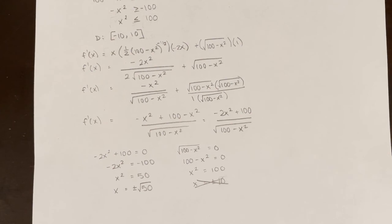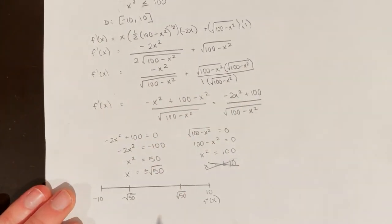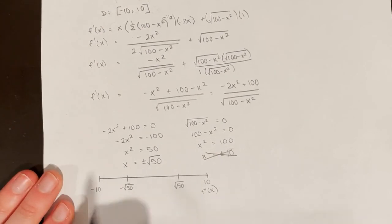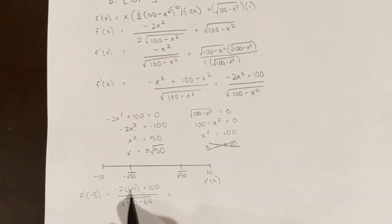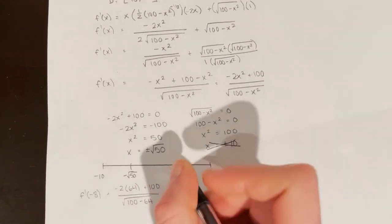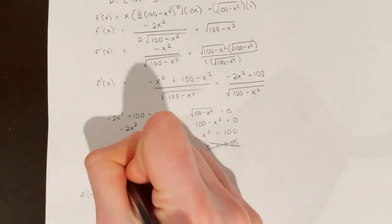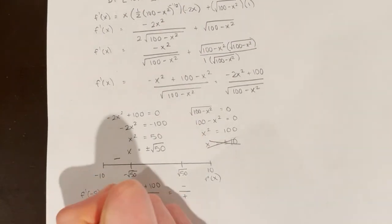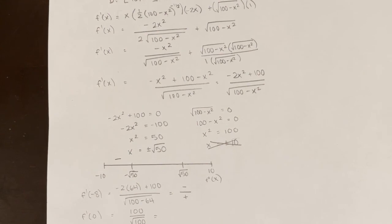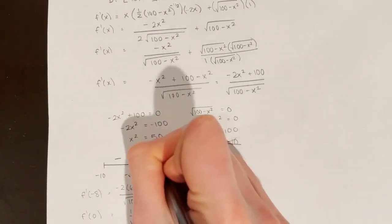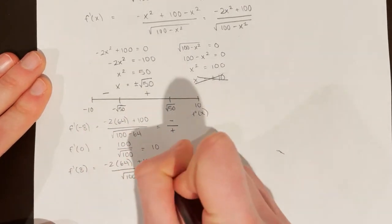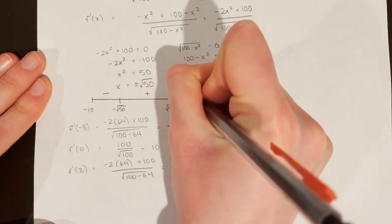Now I make my sign chart and test values. Testing f prime of negative 8 between negative rad 50 and negative 10: I get negative 2 times 64 plus 100 on top — a negative over a positive square root — which is negative. Testing f prime of 0: I get 100 over the square root of 100, which equals 10 — positive. Testing f prime of 8: same structure as negative 8 — negative over positive — which is negative.